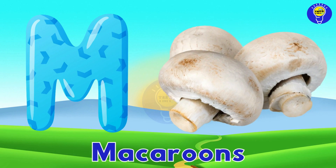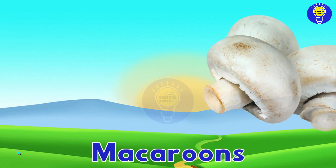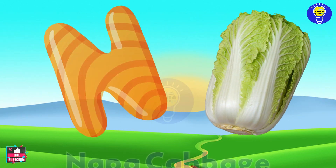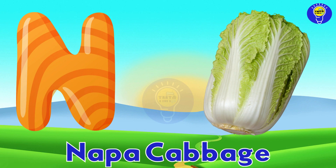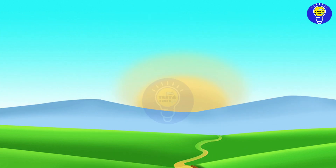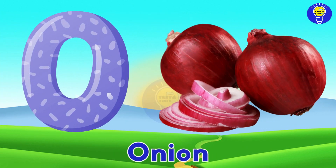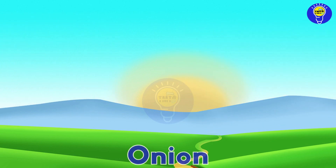M is for mushroom, mushroom. N is for napa cabbage, napa cabbage. O is for onion, onion.